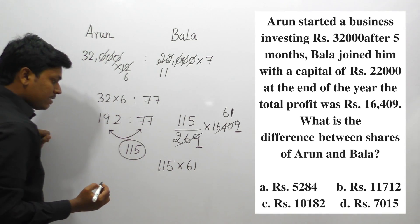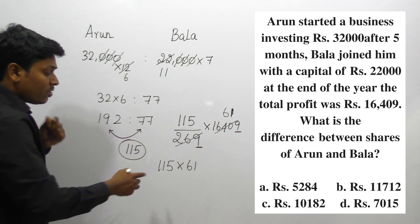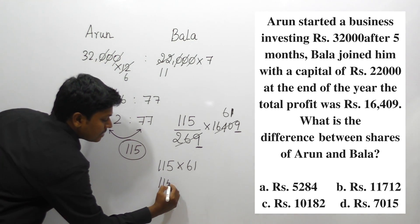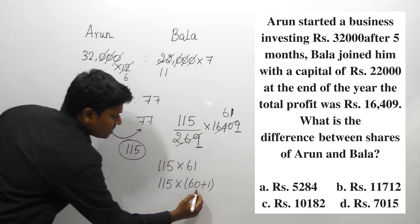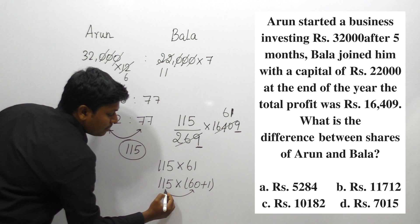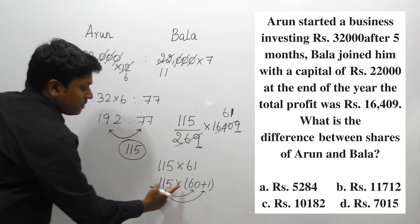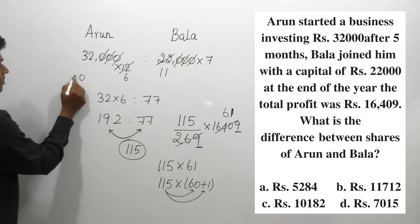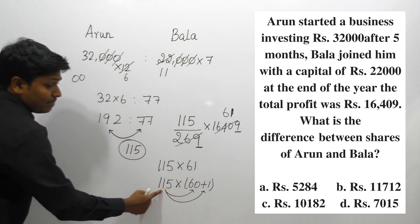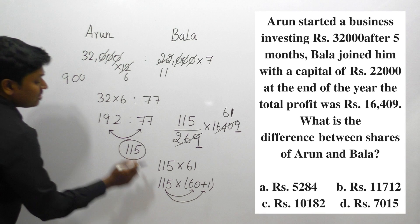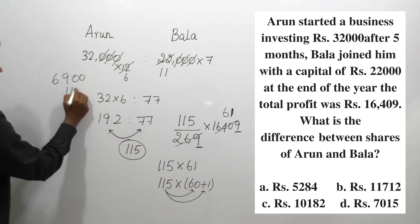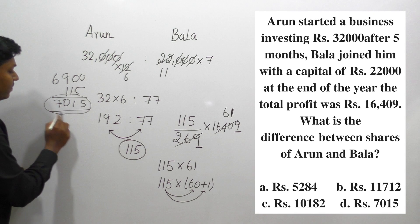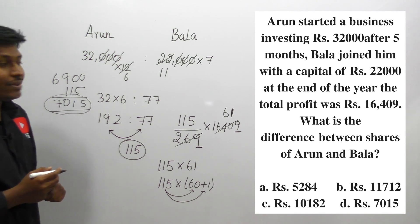To multiply 115 into 61 faster, write it as 115 into (60 plus 1). First, 115 into 60: write 0, then 6 times 5 is 30 so carry 3, 6 times 1 is 6 plus 3 is 9, then 6 — giving 6,900. Then 115 into 1 is 115. Adding: 6,900 plus 115 gives 7,015.